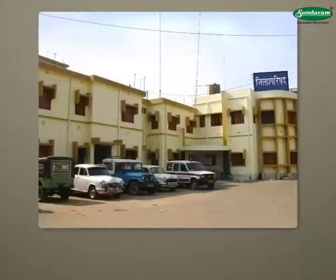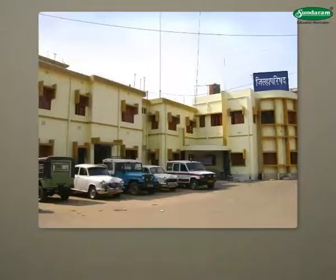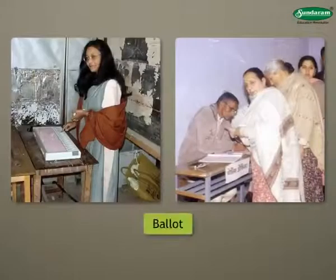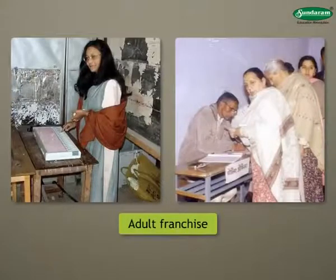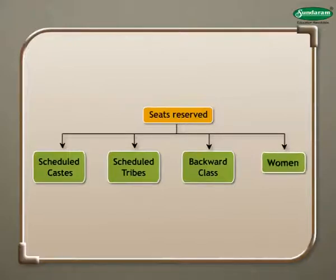The Zilla Parishad consists of a minimum of 50 and a maximum of 75 members. The members are elected by ballot on the basis of adult franchise. Some seats are reserved for scheduled castes, scheduled tribes and the backward class of citizens. Some seats are reserved for women.